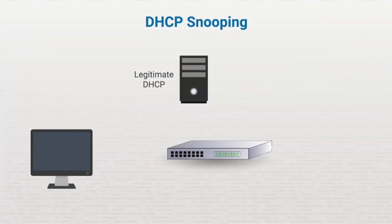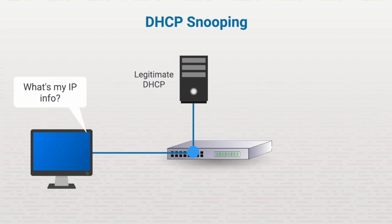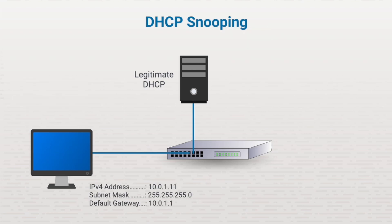DHCP as a service dynamically distributes network parameters such as IP addresses and default gateways to network devices. For example, when you first start a workstation, it automatically requests and receives the IP information from a DHCP server. In this type of environment, the DHCP server is known as a trusted device in the same way that routers, firewalls, and file servers are trusted. A trusted device simply means that it's managed by an administrator in your company.